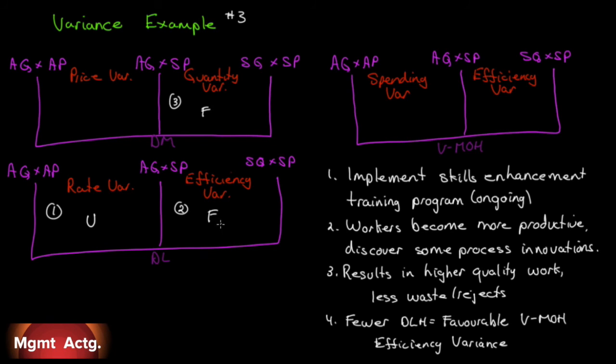Well, look over here on number two. Recall that when this was unfavorable, our efficiency variance for variable manufacturing overhead was also unfavorable. But, when we achieve a favorable labor efficiency variance, fewer hours for the same output, we also achieve a favorable efficiency variance. So, spending some money on training, on skills enhancement, can pay dividends in your efficiency, your labor efficiency rate, so you'll achieve a favorable efficiency variance. You can reduce the amount of waste and rejects and improve the quality, actually, the quality of the existing products. And, your labor, your manufacturing overhead, the variable portion, achieves a favorable efficiency variance as well.